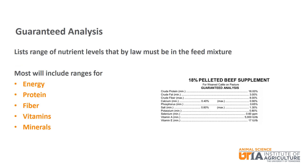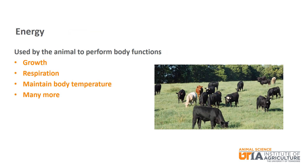The guaranteed analysis is the range of nutrient levels that must be in the feed mixture by law. This could be a minimum, a maximum, or a combination of a minimum and maximum. Most feeds will include in some form nutrient levels for energy, protein, fiber, vitamins, and minerals. We will now go more in depth about these five main nutrients.